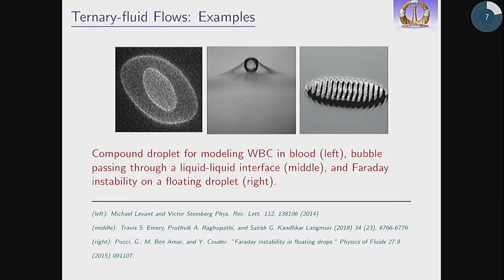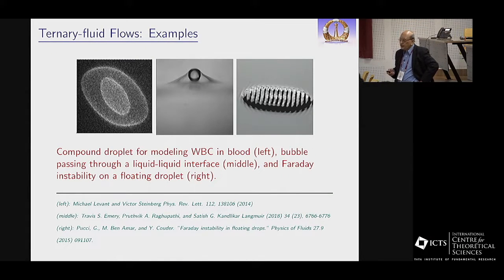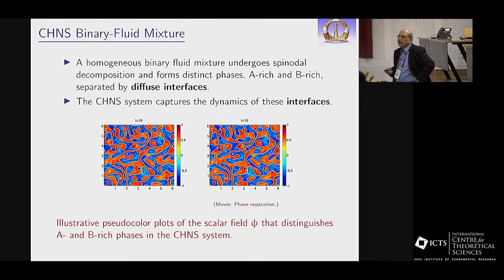Ternary fluid flows include a compound droplet for modeling white blood corpuscles in blood, a bubble passing through a liquid-liquid interface, and the Faraday instability on a floating droplet. There are many examples of importance both from the point of view of fundamental physics and applications.